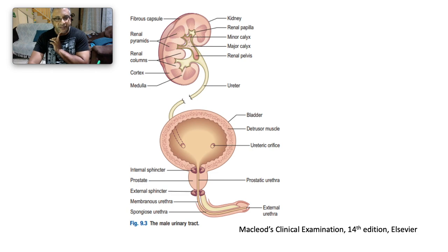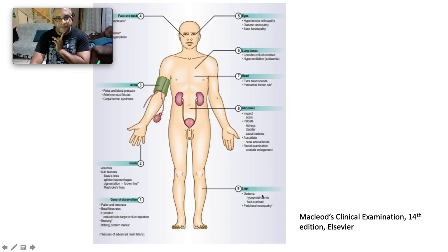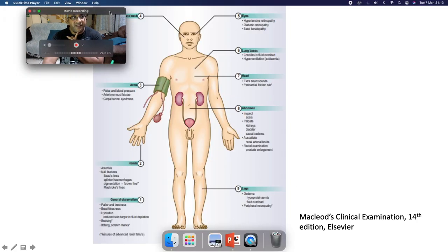The male urinary tract begins with the renal pelvis and calyx, which drain the renal pyramids, coming down into the ureter, into the bladder, and out via the urethra. There is an internal sphincter and external sphincter, and different portions of the urethra: the prostatic urethra, membranous urethra, spongiose urethra, and external urethra.